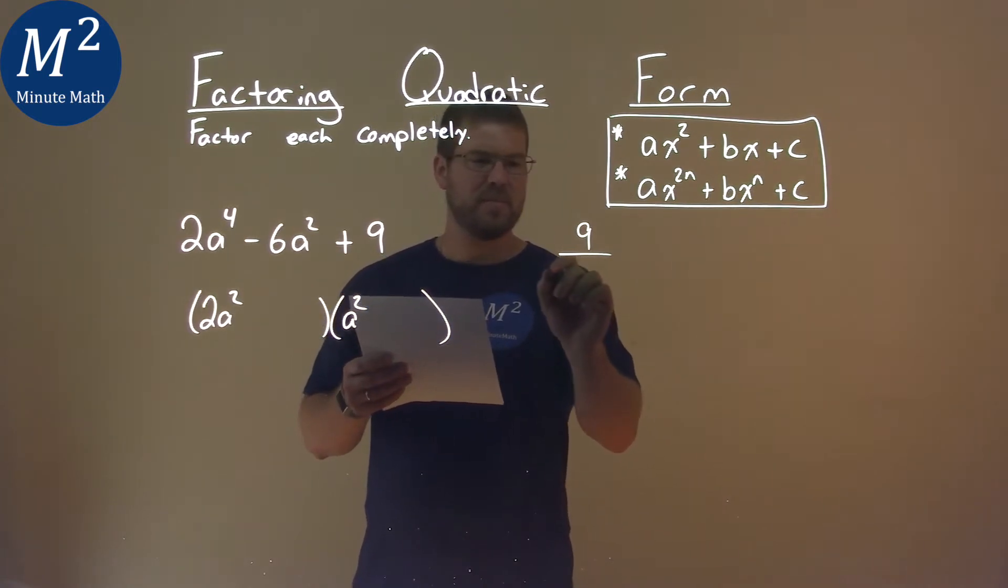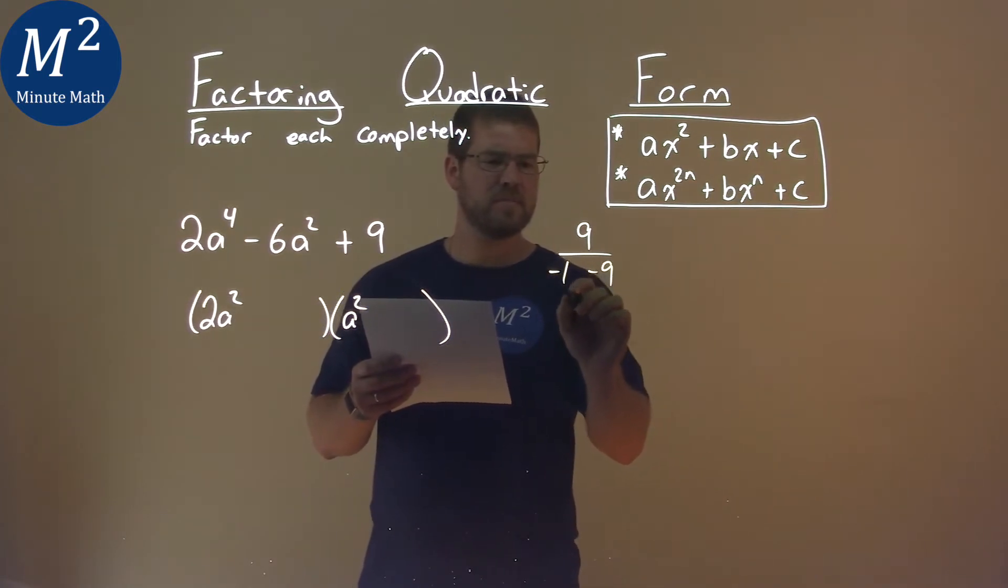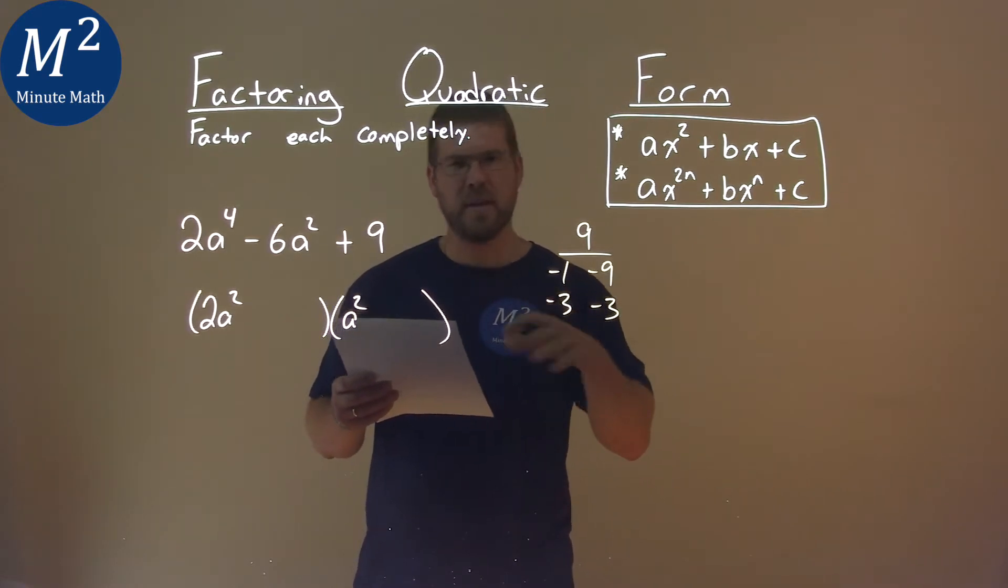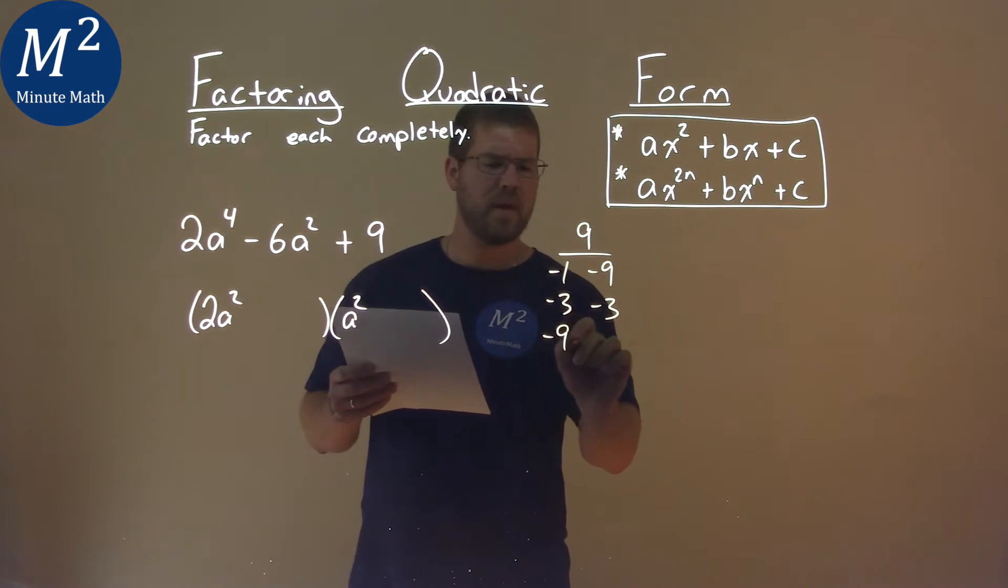So that's just negative 1, negative 9, negative 3, negative 3, and then you can flip it around, negative 3, negative 3, or negative 9, negative 1.